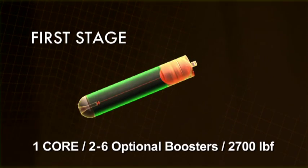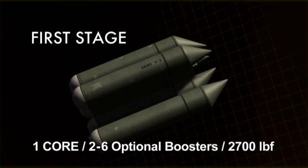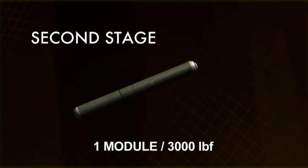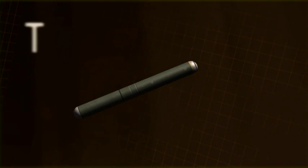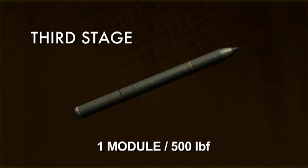First stage: one core and two to six optional boosters at 2,700 pounds of thrust each. Second stage: one module, 3,000 pounds of thrust. Third stage: one module, 500 pounds of thrust.